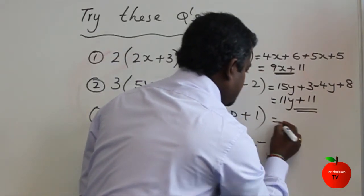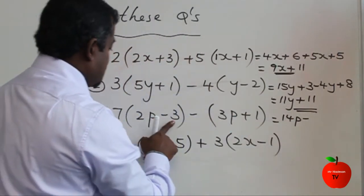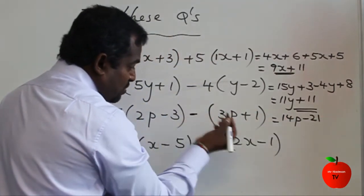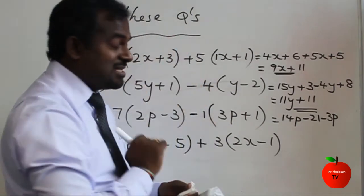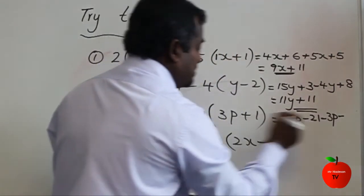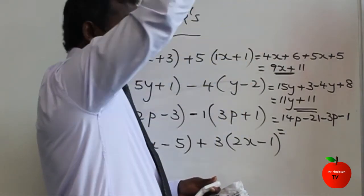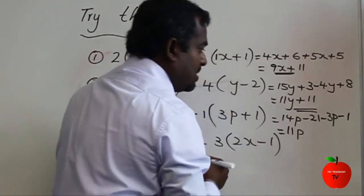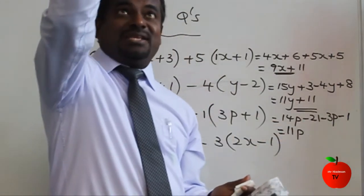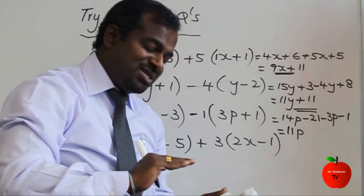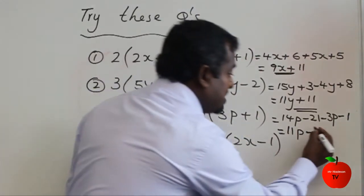The next one: 7 times 2p comes to 14p. Minus 7 times 3 comes to 21. Minus — there's no number, so there's a 1 there. Minus 1 times 3p is minus 3p. Minus is very dangerous: minus into plus comes to minus. 1 times 1 comes to 1. Now simplify: 14p minus 3p — 14 up, minus 3 coming down — still up, means 11p. Minus 21: going 21 steps down. Minus 1 again, 1 step down. So altogether 22 steps down — that's minus 22.